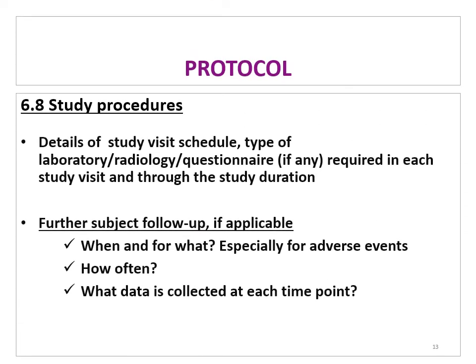The study procedures section details the visit schedule — what type of laboratory tests, radiology, or questionnaires are required at each study visit and throughout the study duration. It is best organized as a study map or table showing visit one, visit two, and so on, with what data is collected at each time point. Not every lab test needs to be done at every visit — for example, a blood draw might happen monthly but not at every two-week visit.